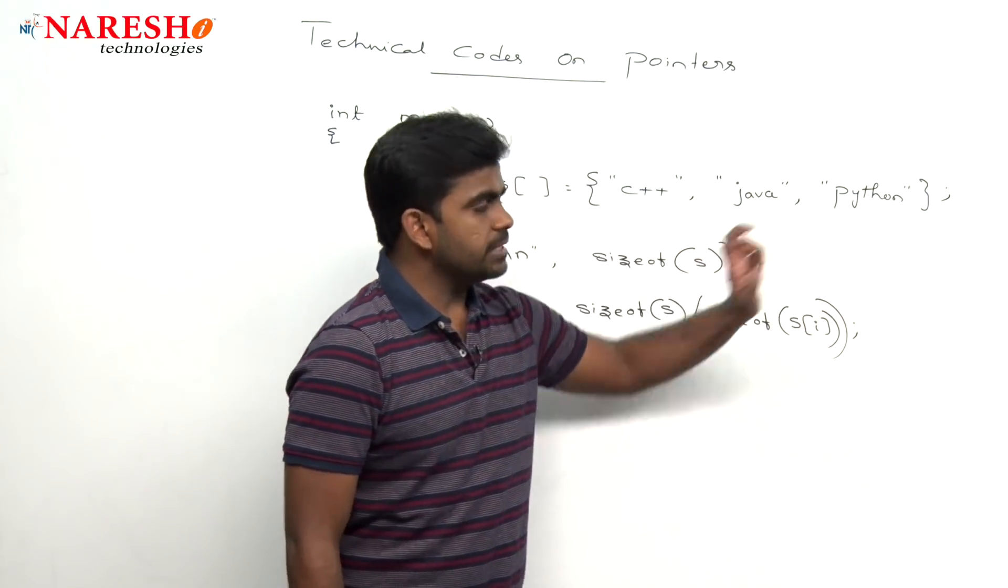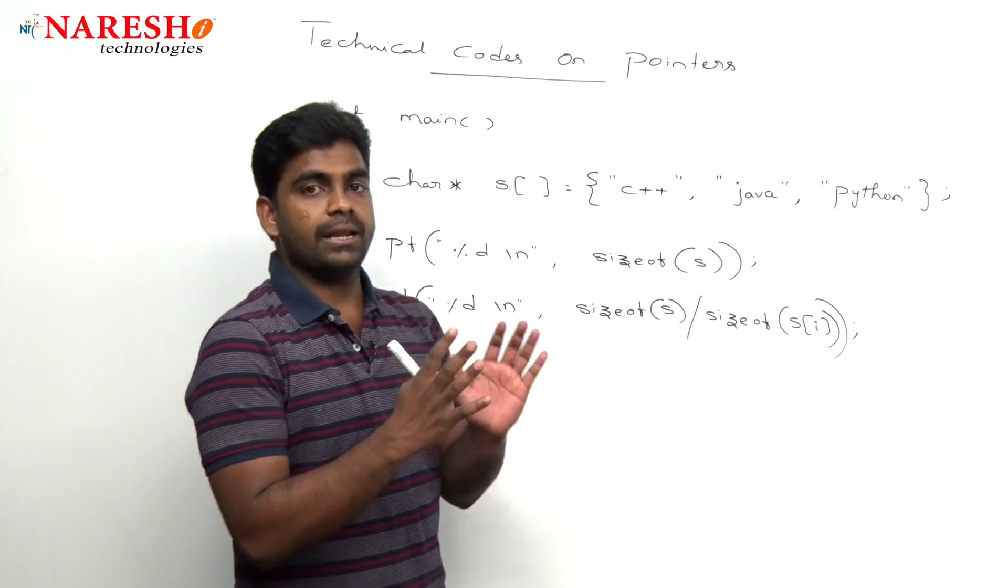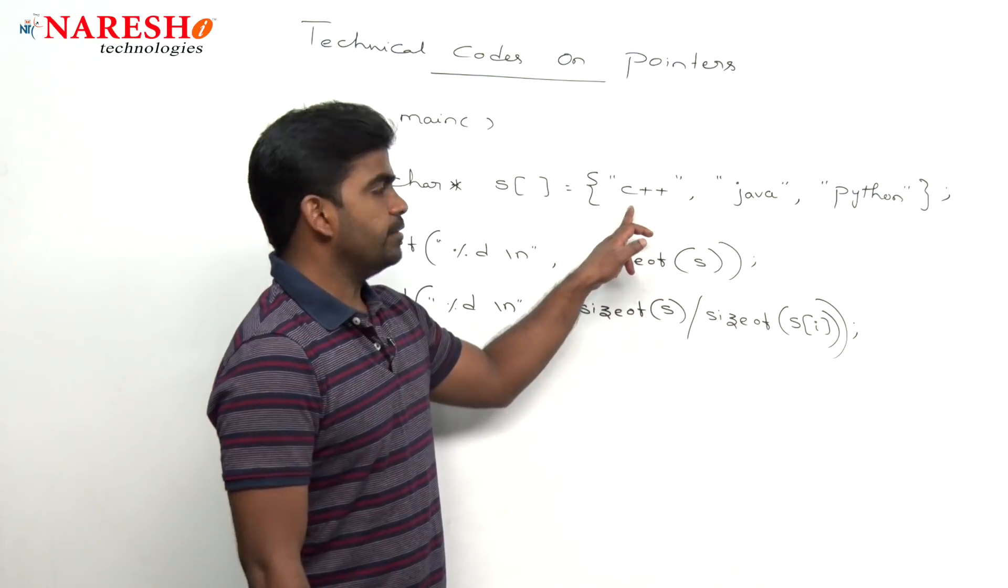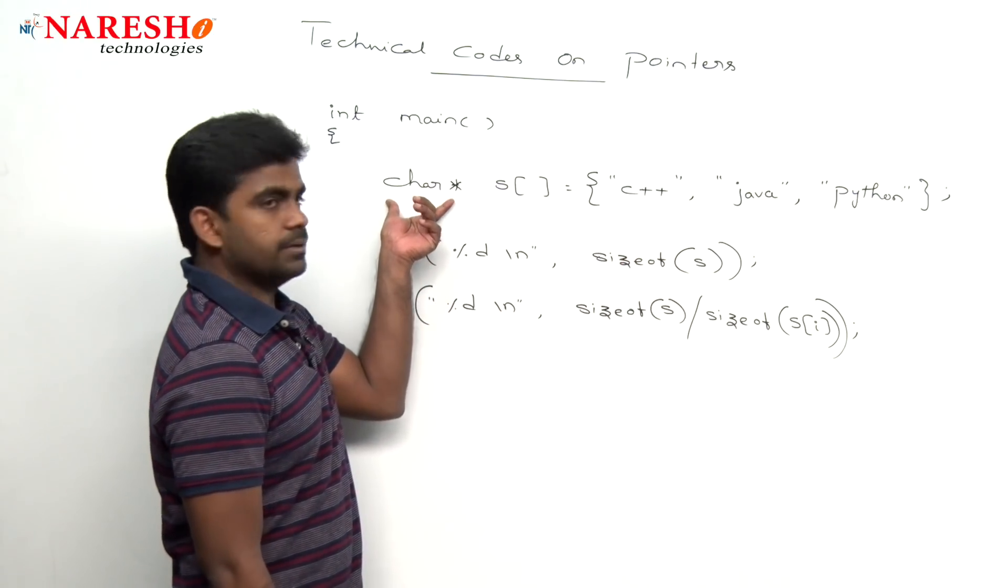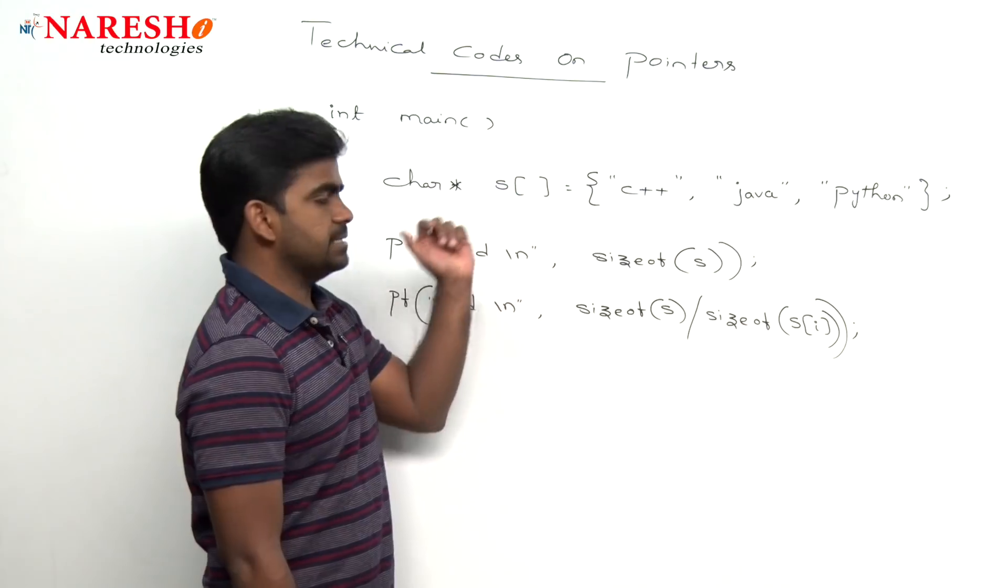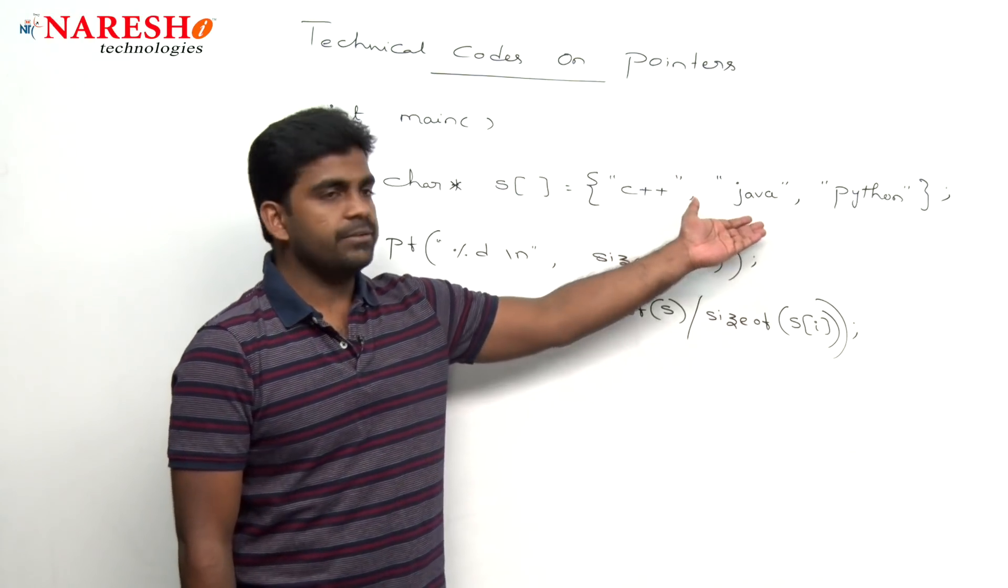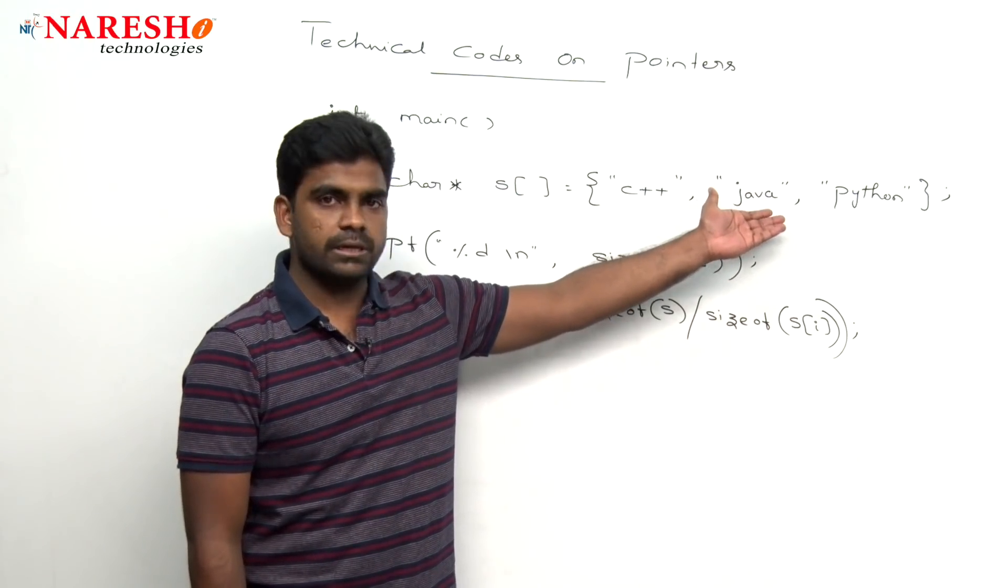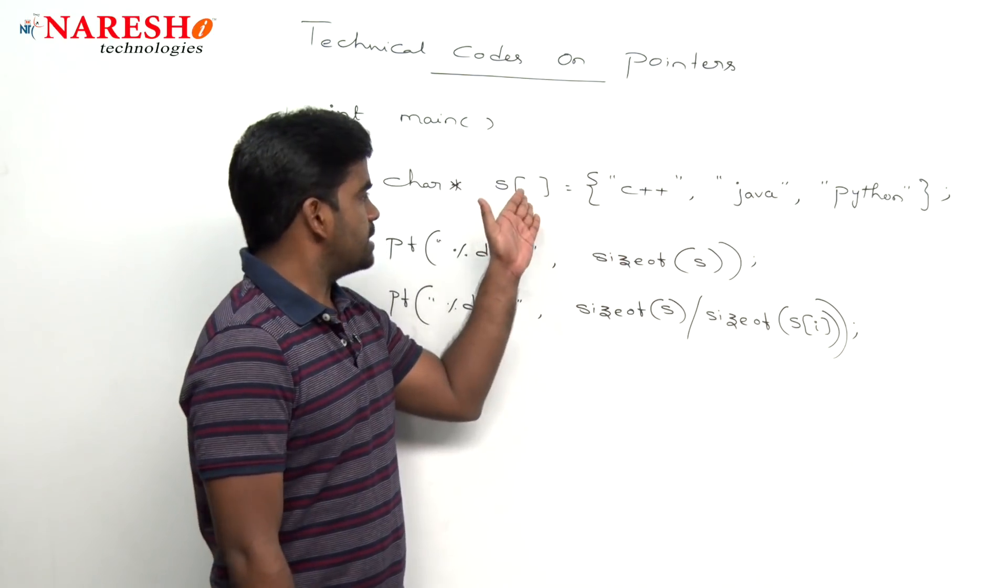Here the three strings we are taking, so this is one array. Array of strings, string means what? Character pointer. That array name is S and here it is directly we are initializing. So depends on the initial elements, the size will be fixed.